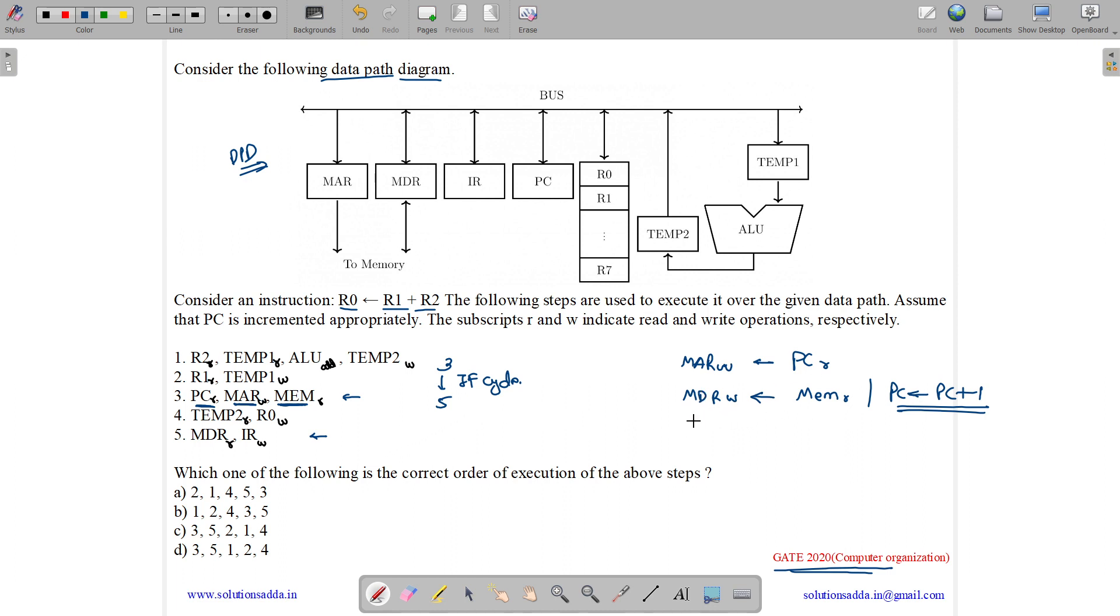Then we have our fifth instruction. So what it does is that it then reads the memory data register and stores it into our instruction register write. So we will store our instruction from our memory to our instruction register. So this is third. These three are third instruction. This is fifth instruction. So first of all, we will have three, then we will have five.